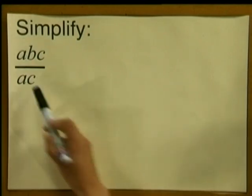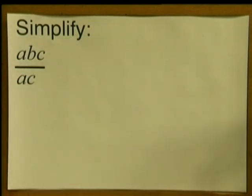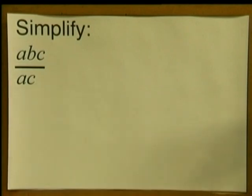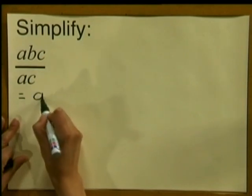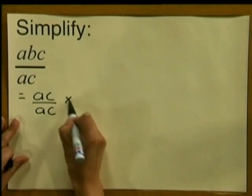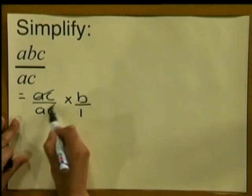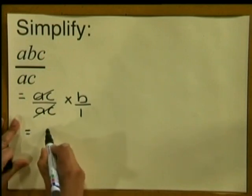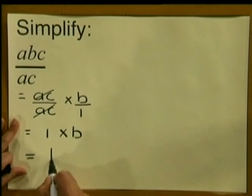AC is the common factor in the numerator and the denominator. That means we can divide both the numerator and the denominator by AC. Another way of writing this is AC divided by AC, times B over 1. The ACs cancel out and we are left with 1 multiplied by B, which gives us B.